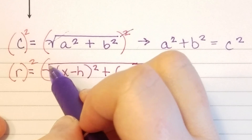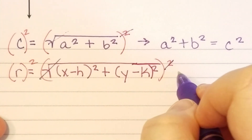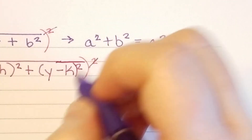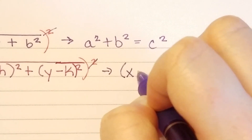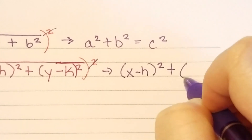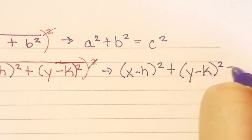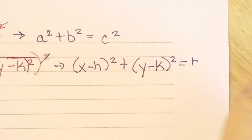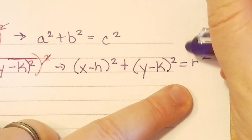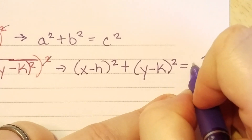So if I square a square root, that goes away. And if I just rearrange it, I'll have x minus h whole squared plus y minus k whole squared equals r squared.